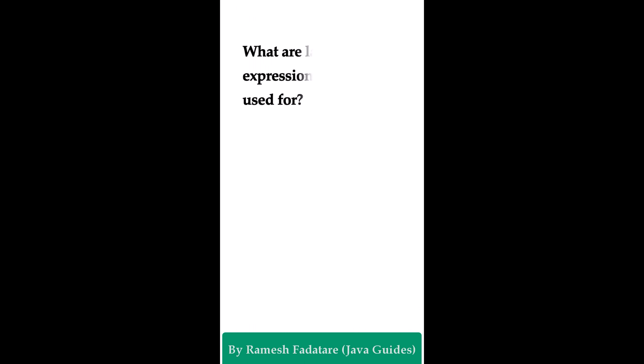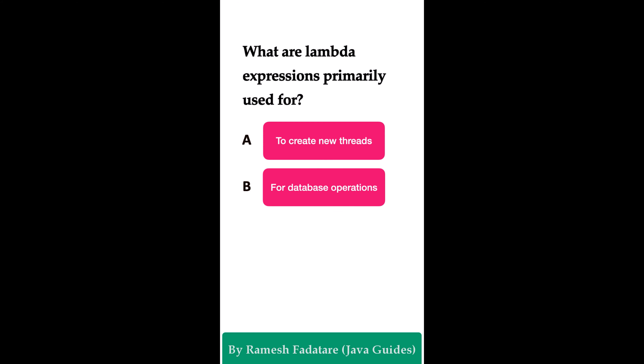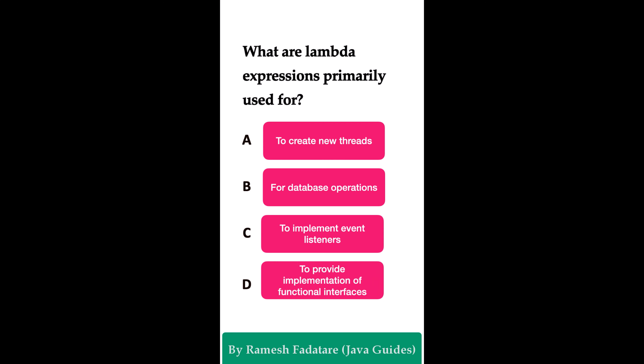What are lambda expressions primarily used for? Option A: to create new threads. Option B: for database operations. Option C: to implement event listeners. Option D: to provide implementation of functional interfaces. The correct answer is option D — to provide implementation of functional interfaces. Lambda expressions are primarily used to provide implementations for functional interfaces in a concise way. A functional interface is an interface with a single abstract method, and we use lambda expressions to implement it.